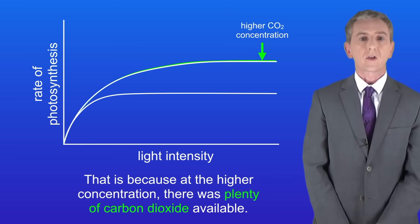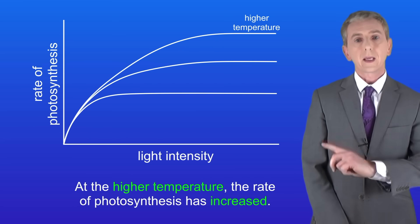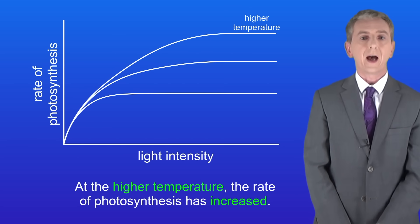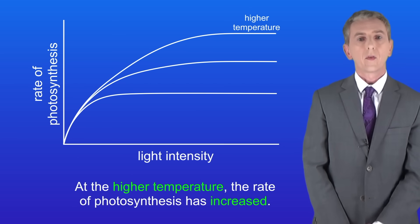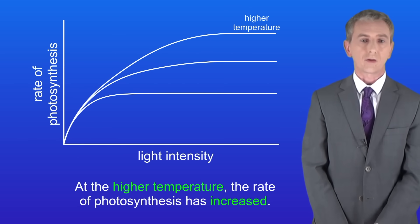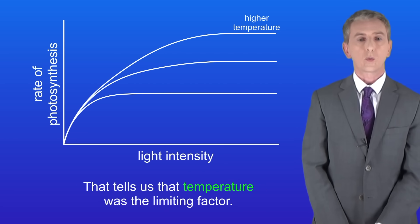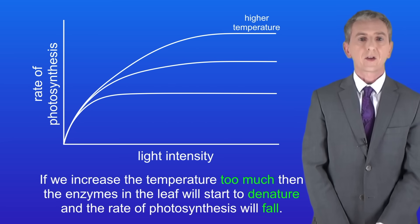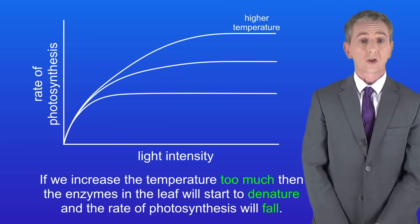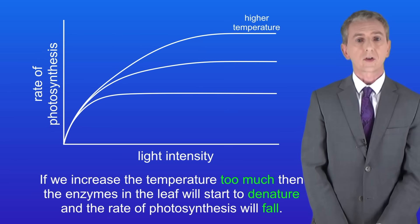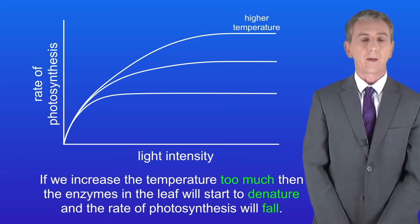So what happens if we now increase the temperature? Here's the graph, and as you can see, at the higher temperature the rate of photosynthesis has increased — so that tells us that temperature was a limiting factor. However, if we increase the temperature too much, the enzymes in the leaf will start to denature and the rate of photosynthesis will fall.